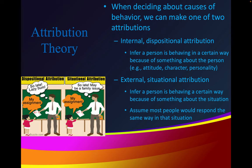When deciding about causes of behavior, we can make one of two attributions. Internal dispositional attribution: a person is behaving in a certain way because of something about the person — their attitude, character, and personality. External situational attribution: a person is behaving a certain way because of something about the situation, assuming most people would respond the same way in that situation.